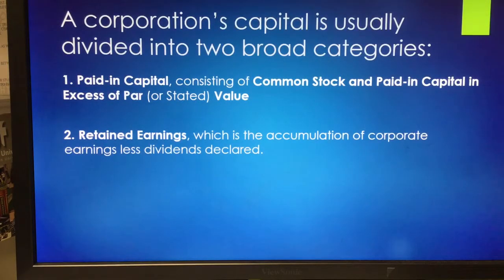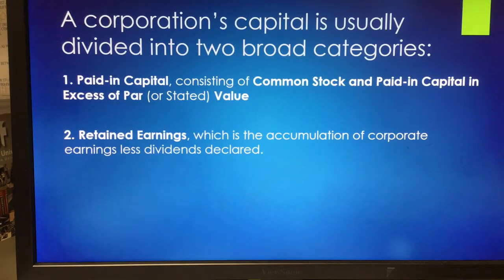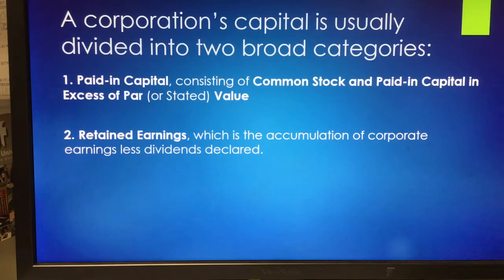The corporation's capital is usually divided into two broad categories: paid-in capital and retained earnings. Paid-in capital is money that investors have paid into the corporation. The paid-in capital accounts consist of common stock and paid-in capital in excess of par — sometimes called additional paid-in capital, or even premium on common stock, though that term is less common today. And then we have retained earnings, also called earned capital — the accumulated profits of the company.